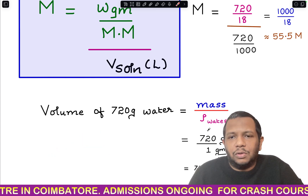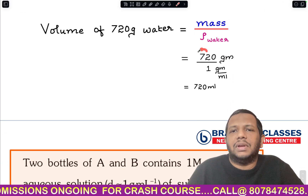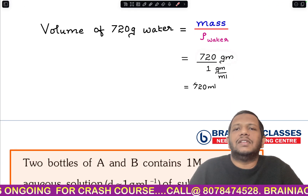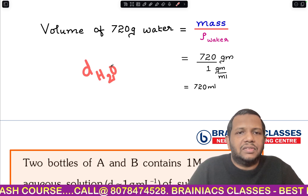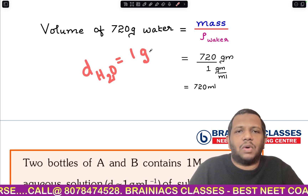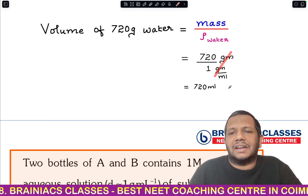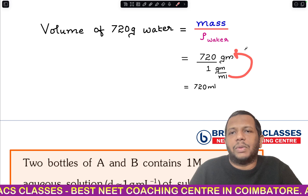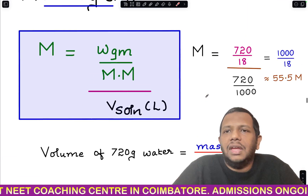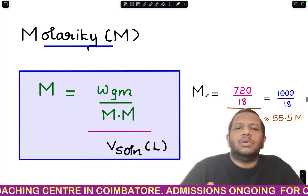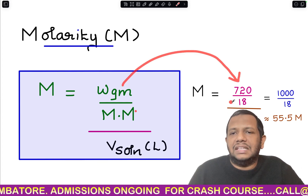Mass is 720 grams. The density of water is 1 g/mL — you need to remember this. So volume = 720 g ÷ 1 g/mL = 720 mL. The gram units cancel, leaving 720 mL as the volume.